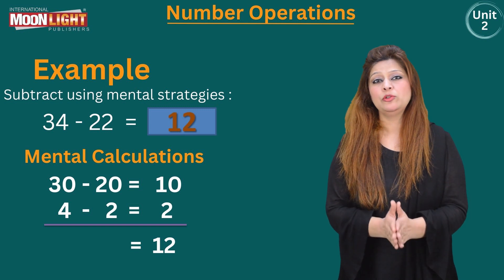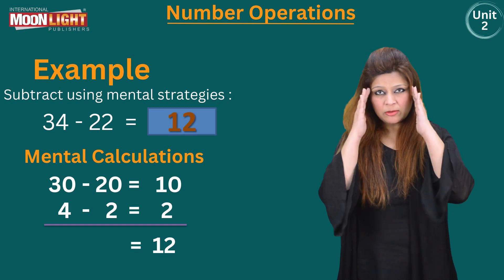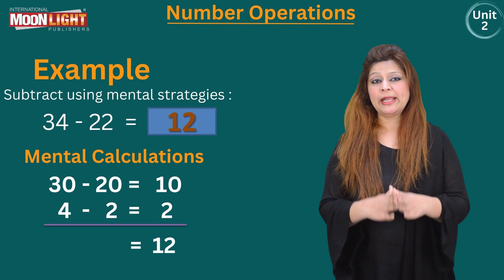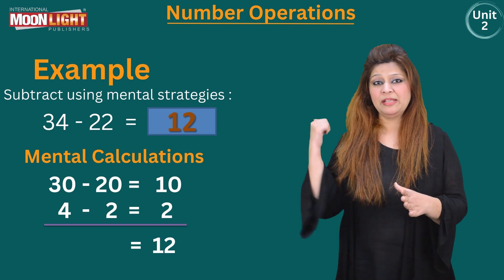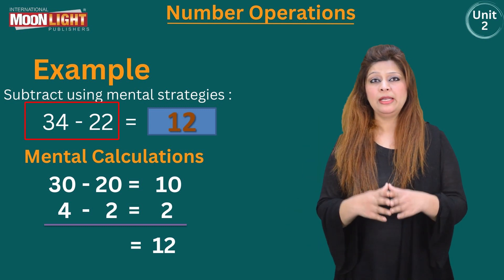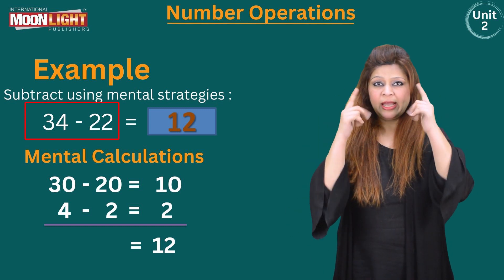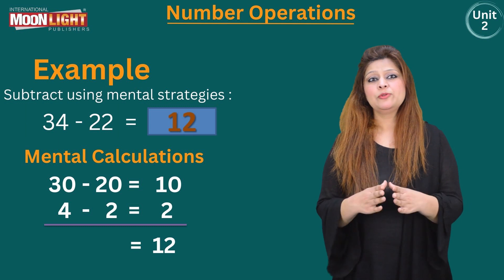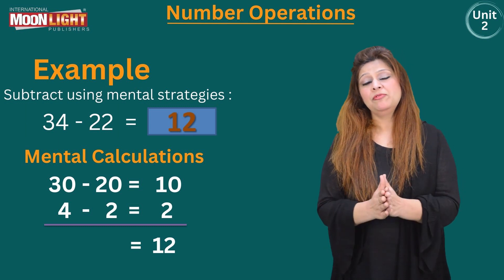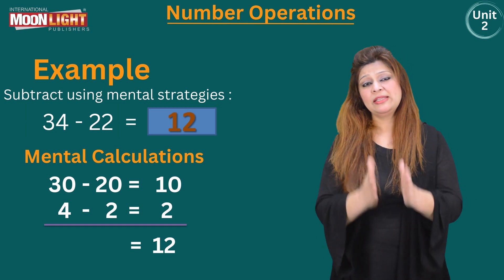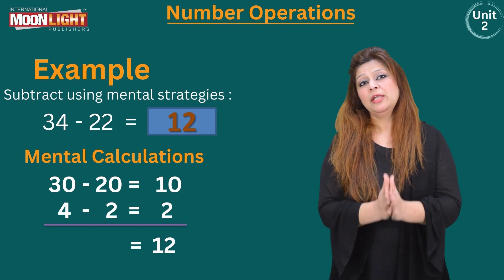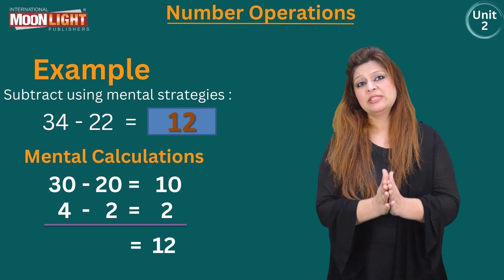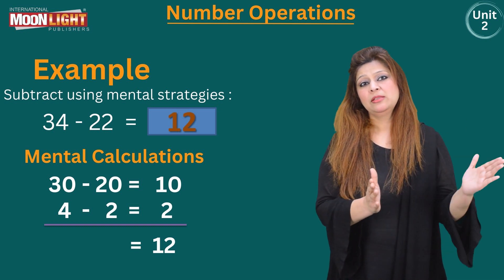In our mental calculations, we are going to write the numbers 34 and 22 in our mind — that is why I have circled them. We are going to break each number into tens and ones, so the first number 34 becomes 30 and 4.